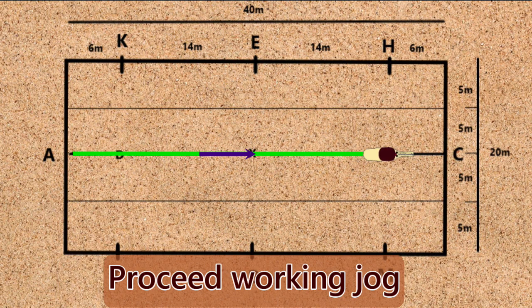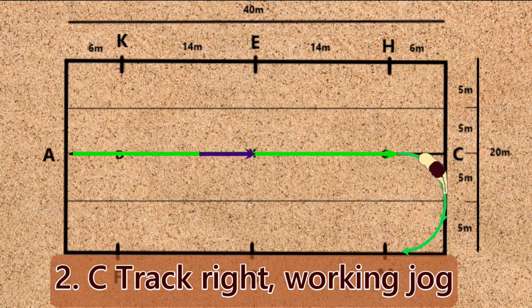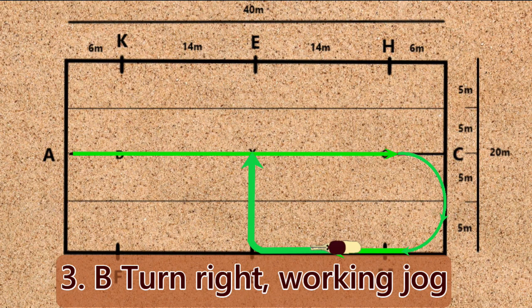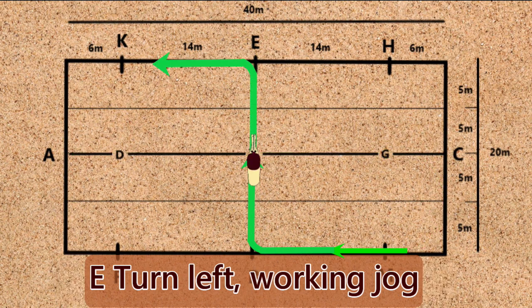Movement 2: C, track right working jog. Movement 3: B, turn right working jog. Movement 4: E, turn left working jog.